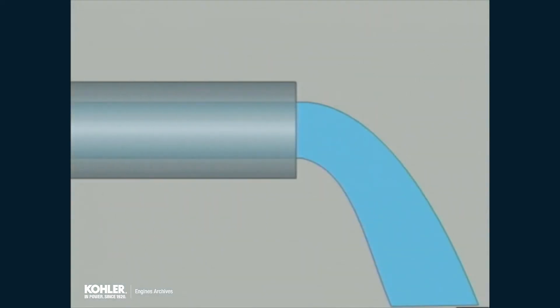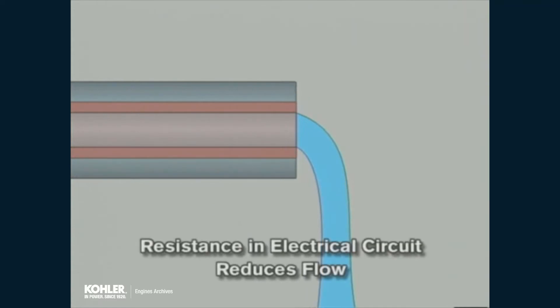The easiest way to understand the relationship is a comparison to water flowing through a pipe. If you get a buildup of rust or scale in the pipe, it reduces the flow and causes a drop in pressure. Similarly, increased resistance in a circuit reduces the amperage and causes a drop in voltage downstream from the resistance.